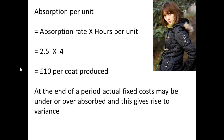Remember it takes four hours to produce each coat, so 4 times £2.50 means our absorption per unit — our absorption per coat — is £10. Now at the end of any period, the actual fixed costs can be under or over absorbed, and that's what gives rise to our variance.